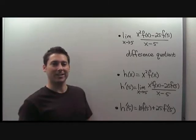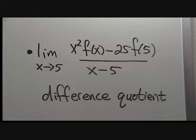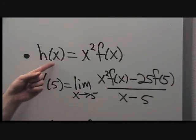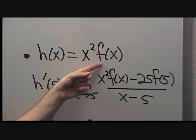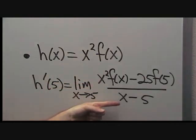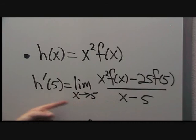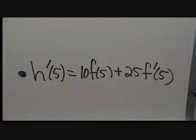Let's do a quick recap. The patterns in the original limit indicated that we were looking at the limit of a difference quotient. With the choice of h of x equals x squared times f of x, we saw that the original limit turned out to exactly be the expression for h prime of 5. We got our final answer by evaluating h prime of 5 using the product rule.